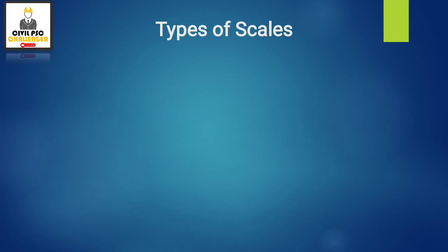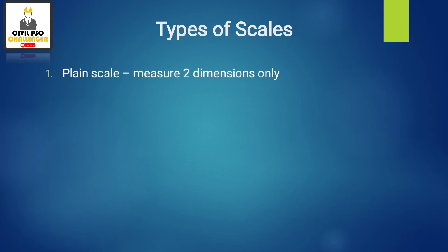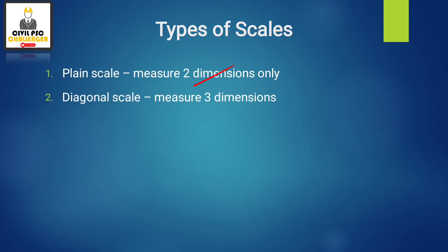Types of scales: First, Plane Scale — measures two dimensions, such as units and tenths, meters and decimeters, or meters and phalanges. Next, Diagonal Scale — measures three dimensions, such as meters, decimeters, and centimeters; units, tens, and hundreds; or yards, feet, and inches.